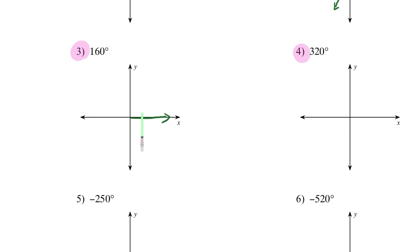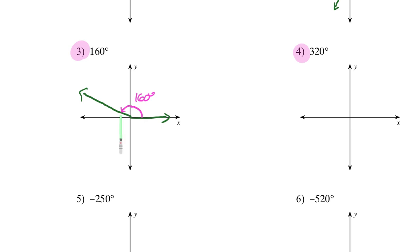For 160 degrees: initial side on the x-axis, opening through here. We know that to the negative part of the x-axis is 180 degrees, so my terminal side should be somewhere around here, closer to the x-axis than the y-axis, because through 90 degrees is the y-axis and I need 70 more to get to 160 degrees. Look at the arrow I'm drawing — once we get to the negative angles, I'll show you the difference.